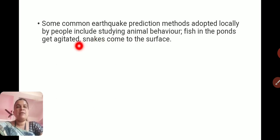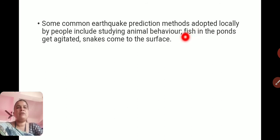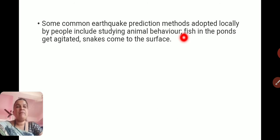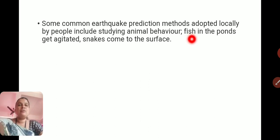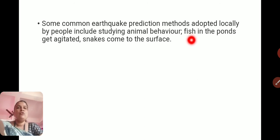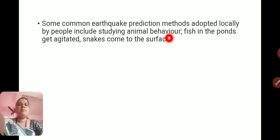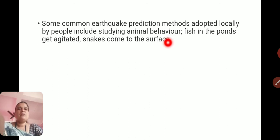For example, during the 2004 tsunami at the Andaman and Nicobar Islands, the fish behaved strangely, moving towards the land side. After some time, the tsunami struck. Many people who studied the behavior of those fish understood that some danger was coming from the sea. They moved to higher areas and saved their lives. By studying animal behavior like fish and snakes, people can predict and save their lives before an earthquake.